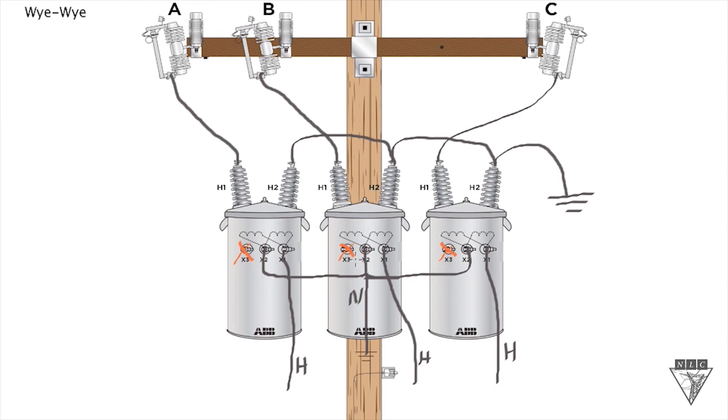All right, so that's a secondary connection on a YY. X2 bushings are all tied together and then tied to ground. And then you've got one hot leg per transformer. And this is a YY connection.